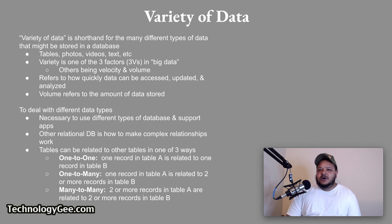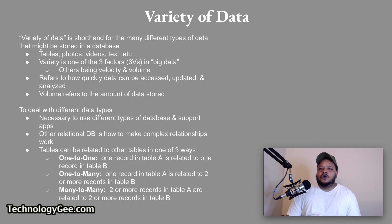Tables can be related to other tables in one of three ways. The first is one-to-one: one record in table A is related to one record in table B. The second is one-to-many: one record in table A is related to two or more records in table B. The third is many-to-many: two or more records in table A are related to two or more records in table B.